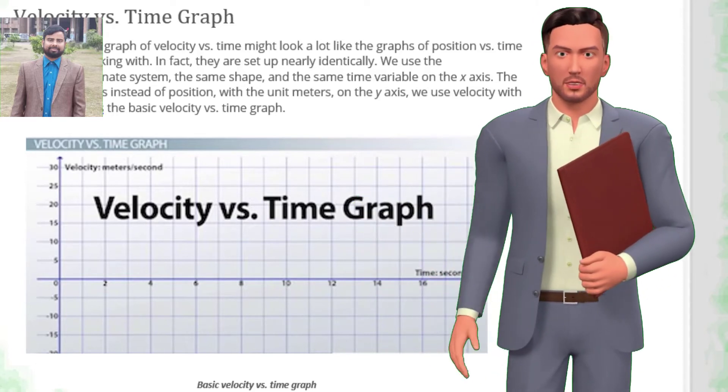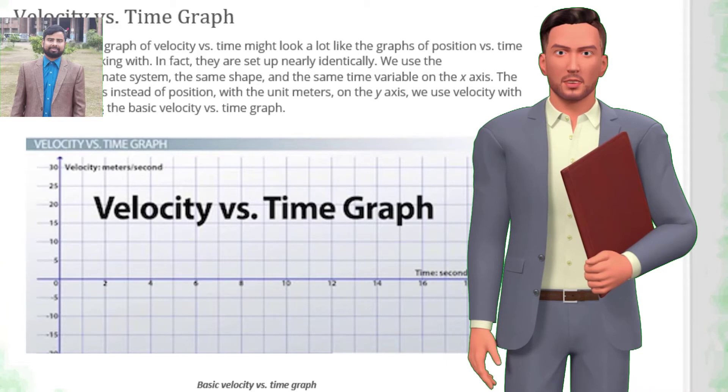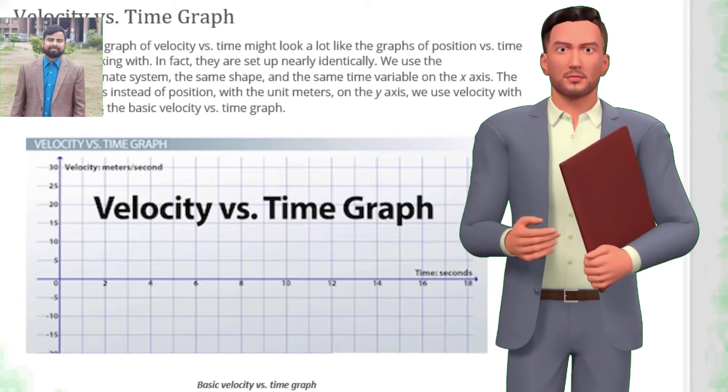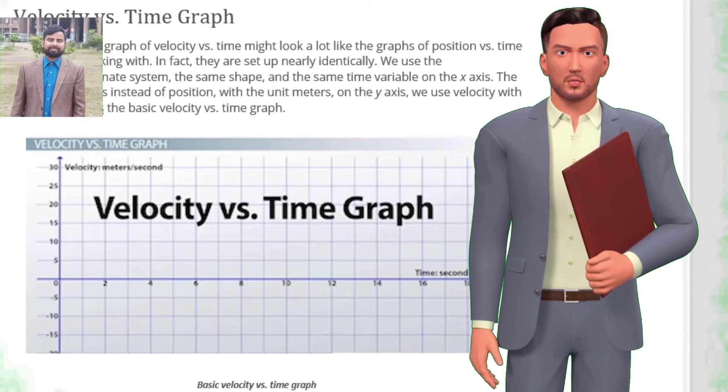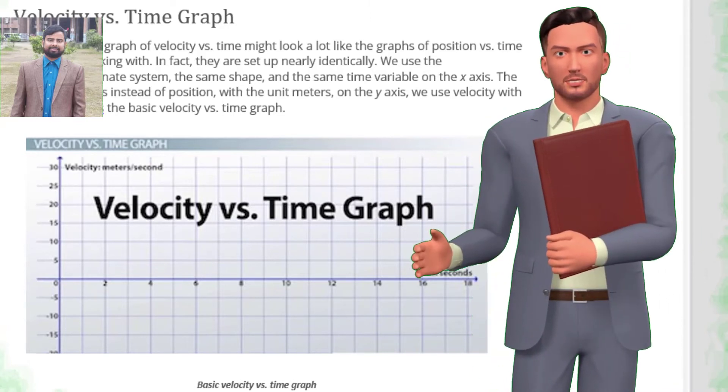Remember, what we are describing with these graphs is the motion of an object in a straight line. Velocity is a vector quantity, requiring a magnitude and a direction, but with straight-line motion, the only directions we have to worry about are forwards and backwards.